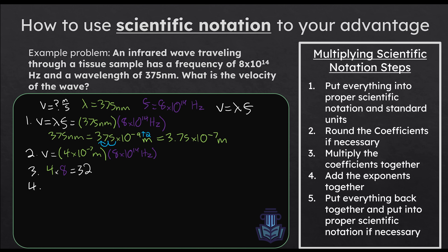Now we move on to step four and do something similar with the exponent portion. We have 10^−7 meters × 10^14 hertz. We don't touch the 10 — the base stays the same — we just add the two exponents: negative seven plus fourteen equals seven. So we get 10^7. Then in step five, we put those two things together: 32 × 10^7.